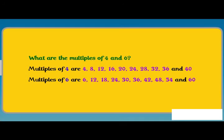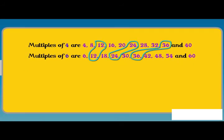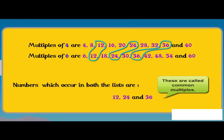Out of these, are there any numbers which occur in both lists? We observe that 12, 24, 36 are multiples of both 4 and 6. These are called common multiples.